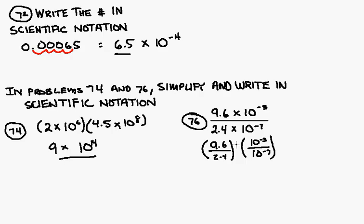So if I go 9.6 divided by 2.4, I get 4 as a matter of fact. So this becomes 4, and this becomes 10 to the minus 3 minus a minus 7. That's 4 times 10 to the minus 3 plus 7. Final answer will be 4 times 10 to the 4th, and we're done with that as well.